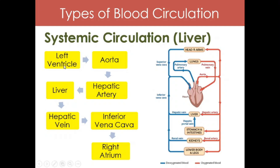Starting from the left ventricle, oxygenated blood passes through the aorta, then through the hepatic artery, and then to the liver. The oxygen in the blood and other nutrients are taken up by the liver. In exchange, the liver returns metabolic waste and carbon dioxide back into the blood — making the blood deoxygenated.